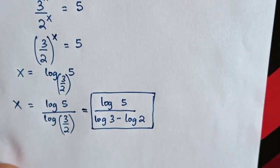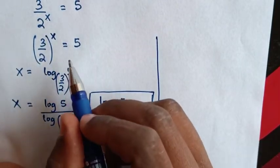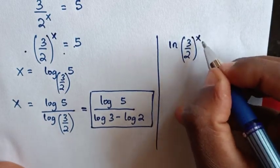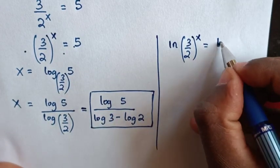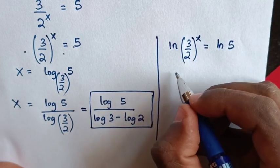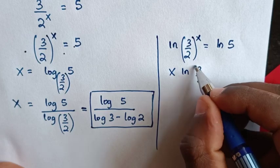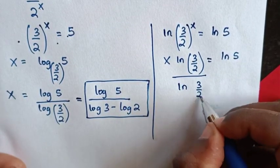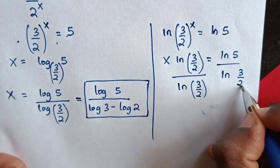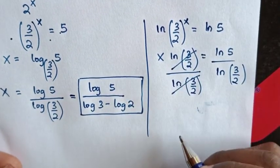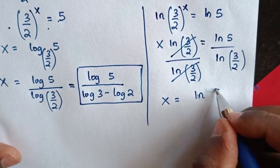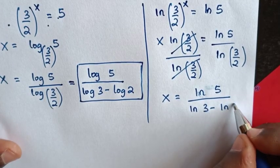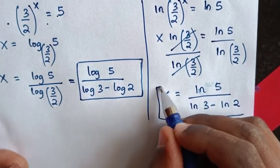In the next step, to find the value of x in terms of ln, we apply ln to both sides. So it will be ln(3 over 2) power x is equal to ln 5. This power of x moves to the front, giving x times ln(3 over 2) is equal to ln 5. Then we divide both sides by ln(3 over 2), so x is equal to ln 5 over ln(3 over 2), which is the same as ln 3 minus ln 2.